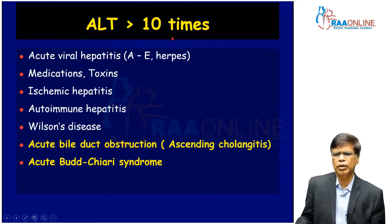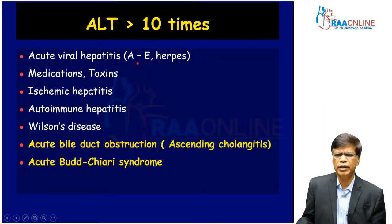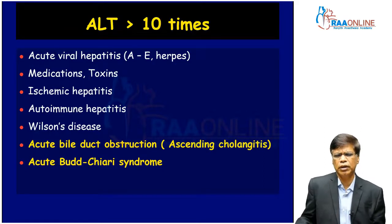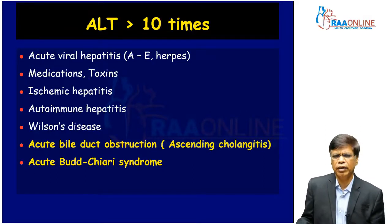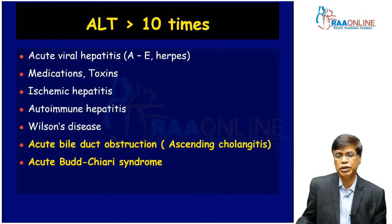When ALT is more than 10 times the upper limit of normal, we have only these possibilities. It could be acute viral hepatitis due to various hepatotropic and non-hepatotropic viruses. We can have acute toxic hepatitis due to medications — prescribed or otherwise — or toxins, including Amanita phalloides, which is a fungal toxin. In older times, some anaesthetic agents were a classic example. One should not forget intentional or unintentional poison intake, like yellow phosphorus.